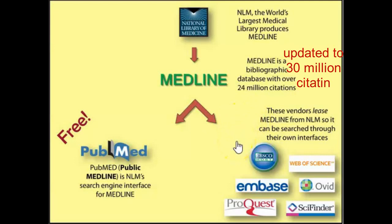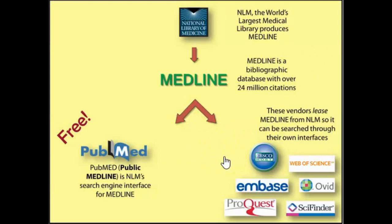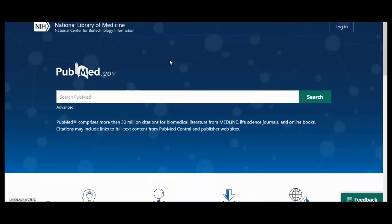Why do we use PubMed or Medline? Firstly, it is very comprehensive with current, up-to-date information. Secondly, all the literature comes from credible sources — all journals are from good, credible resources. There is also a controlled vocabulary for indexing and searching. The journals and articles have been indexed, which allows you to search using particular queries.